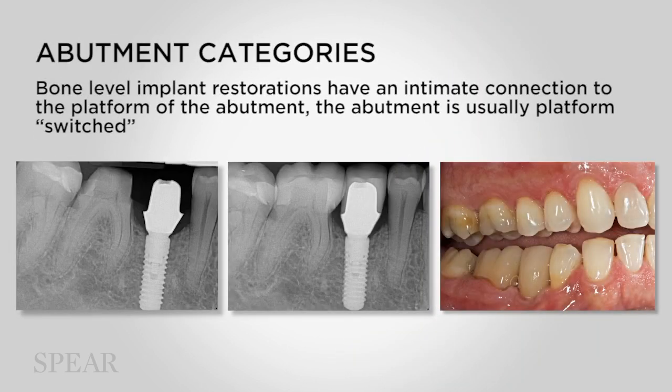In the first radiograph, you'll notice that the abutment is screwed into the implant. It's shaped much like a tooth preparation would be shaped — you can see the margin. The crown is then bonded or cemented to that implant abutment, much like you would bond or cement a crown to a natural tooth. So there is no connection of the final restoration to the implant.